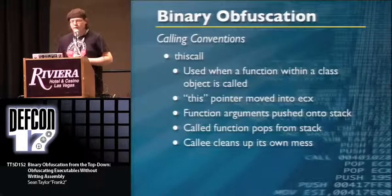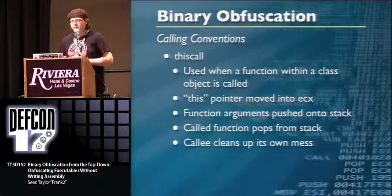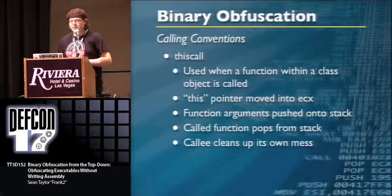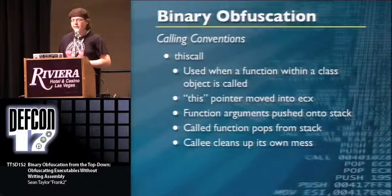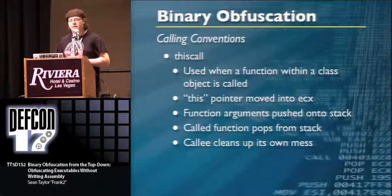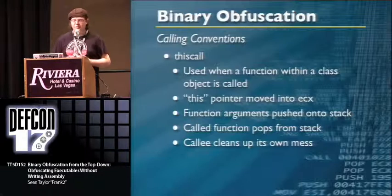Thiscall is used when a function within a class object is called. The 'this' pointer is moved into ECX, function arguments are pushed onto the stack, the called function pops, and the callee cleans up its own mess.